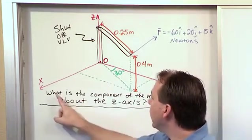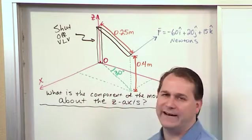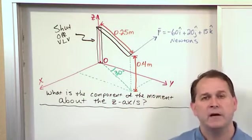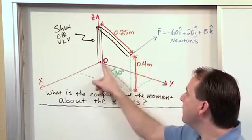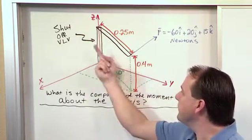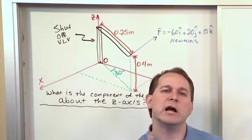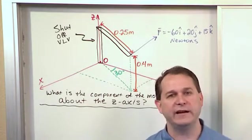And the question we're asking is what is the component of the moment that's developed about the Z axis, about the Z axis. So we know that there's going to be a moment developed about O here, but we want to figure out because the whole object is to turn this thing, right? It's a valve. So we want to figure out how much of the moment is aligned in the K direction or the Z direction.